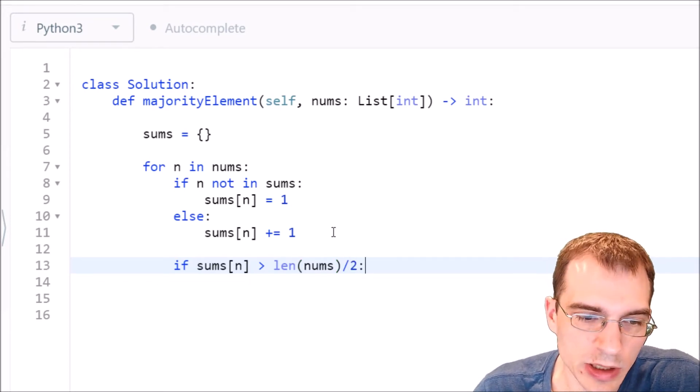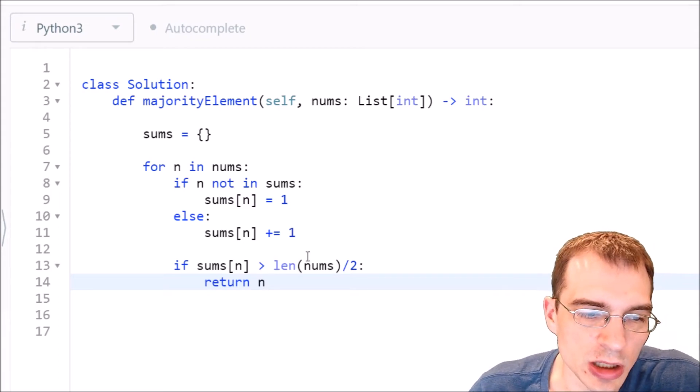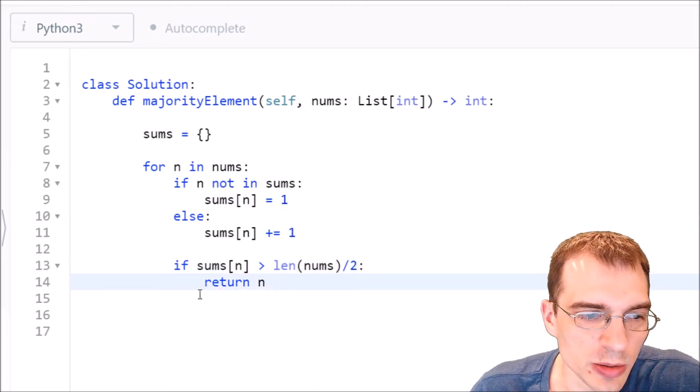Then we can just return our current n because that has to be the majority element. This identifies what the majority element is. As soon as something is bigger than that, that is the majority element. So we can return that.